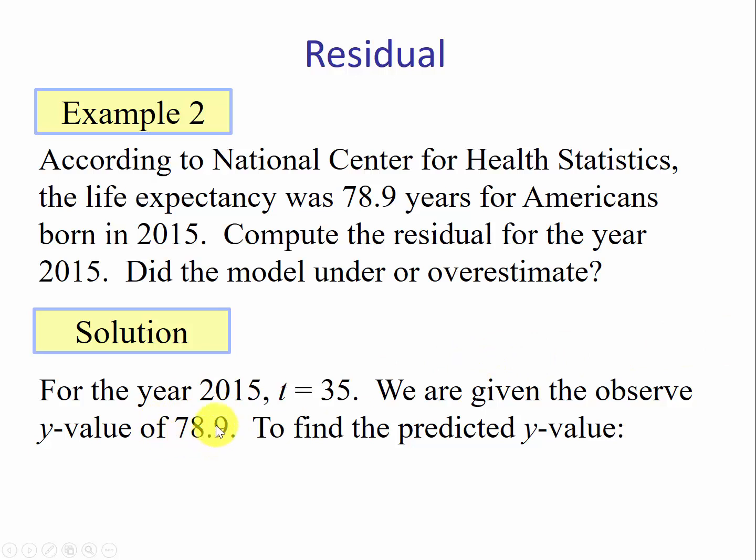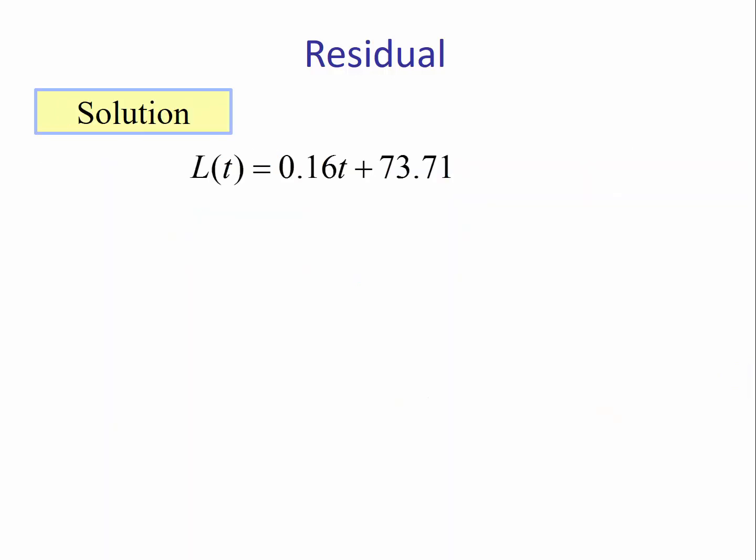We have the actual or the observed y-value of 78.9, so we're going to subtract this number from our predicted y-value when t is 35. Now we substitute 35 in for t, we multiply, and then we add 73.71, and we get 79.31.